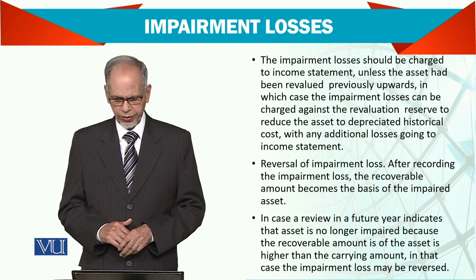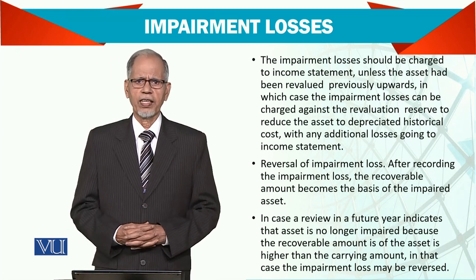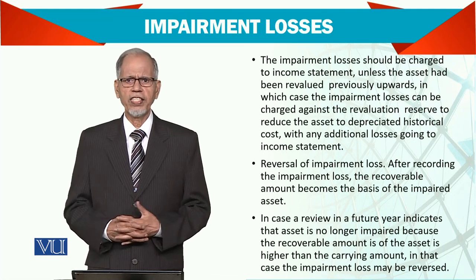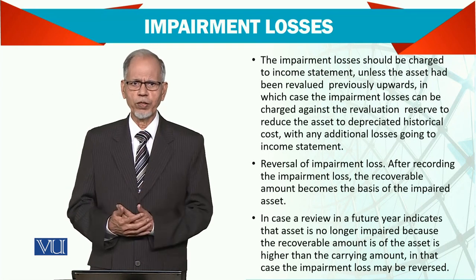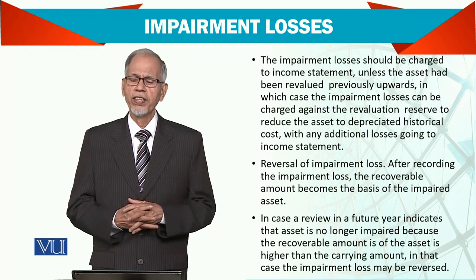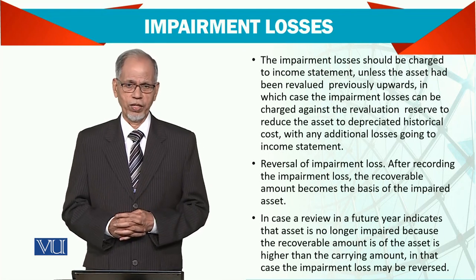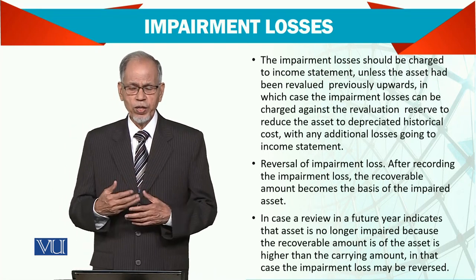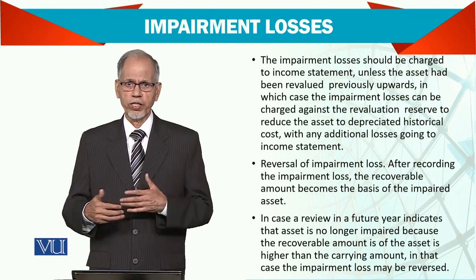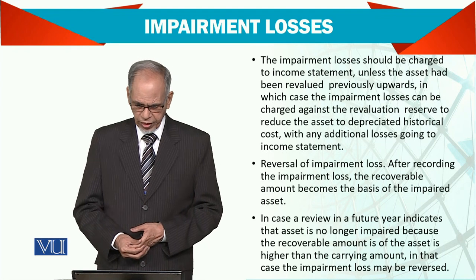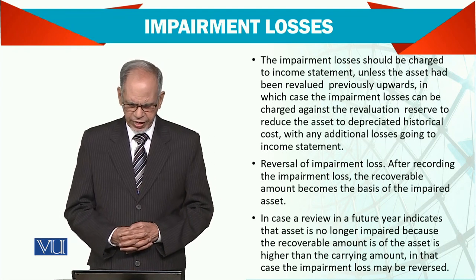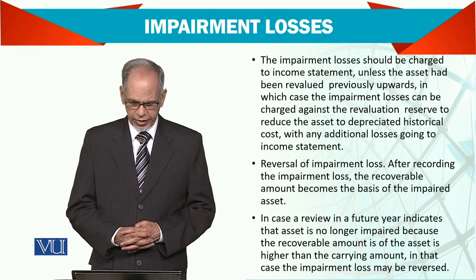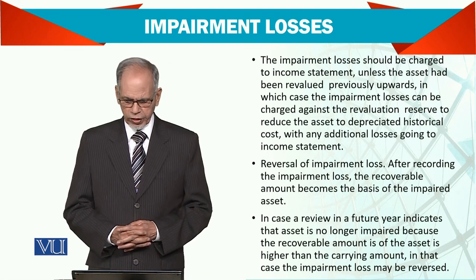Reversal of impairment loss: it sometimes happens that previously we have impaired an asset and there was a loss, but things have changed and indicators have suggested the asset value and recoverable value is now higher. So then we have to reverse the impairment loss. In case of review in future years, if the recoverable value of the asset is higher than the carrying value, then the impairment loss may be reversed.